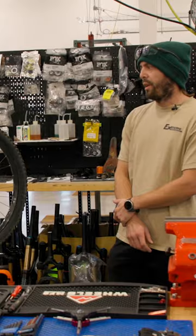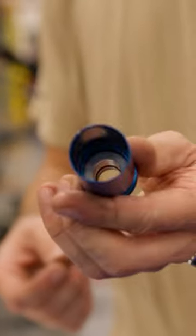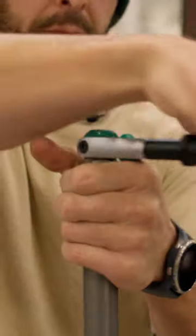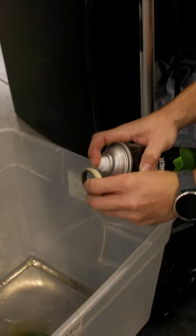These Ohlins forks come with a spacer pre-installed in the negative air chamber. Today we're going to try removing that to see if it gets the feel that the customer is after with the fork. While we're at it, we're also going to do a standard 50-hour leg service.